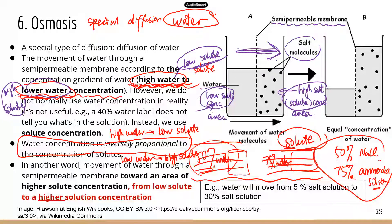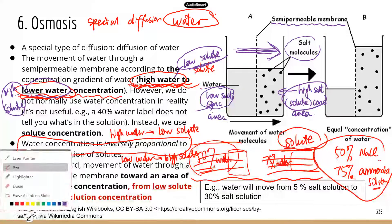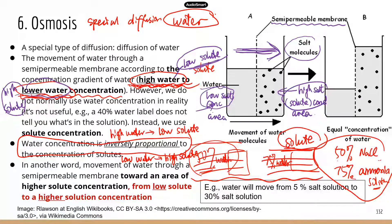You can also use water concentration to solve this problem and get to the same conclusion. The left half has no solute, so it's a very high water concentration area. The right half has more salt molecules, so it has less water — low water concentration. Water moves from high water to lower water concentration, which is still from left to right. Both methods give you the same conclusion.